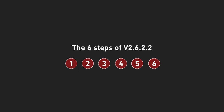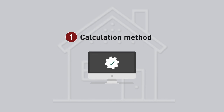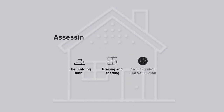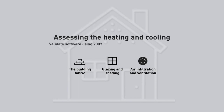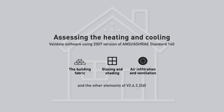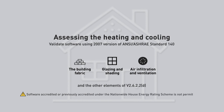Let's step through an example of using this method. It's made up of six steps. Step one is selecting a calculation method. The software program used must be validated and be capable of assessing the heating and cooling load by modelling the building fabric, glazing and shading, air infiltration and ventilation, and the other elements included in V2.6.2.2 Part D. House energy rating software accredited or previously accredited under the Nationwide House Energy Rating Scheme or NATAS are not permitted for this method.